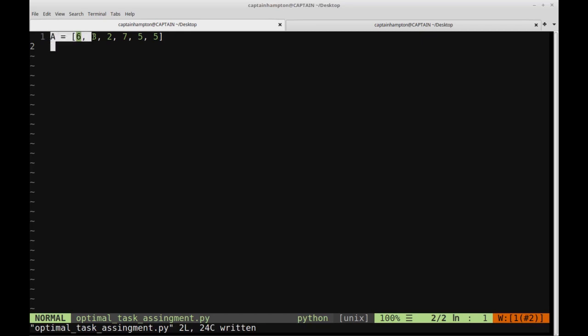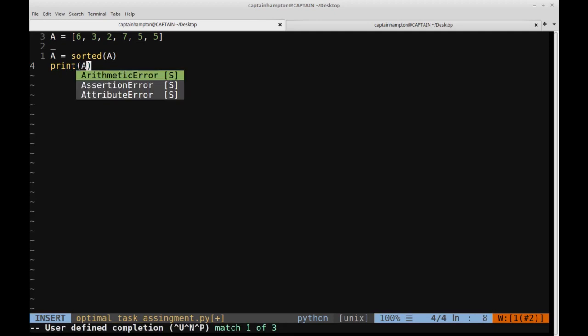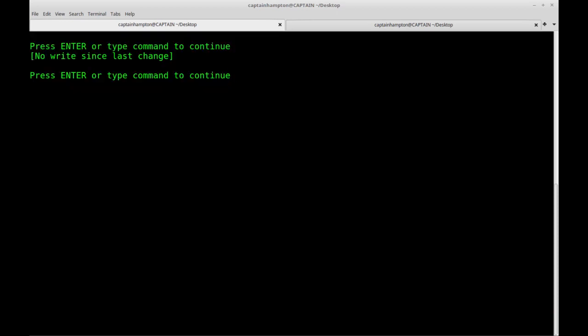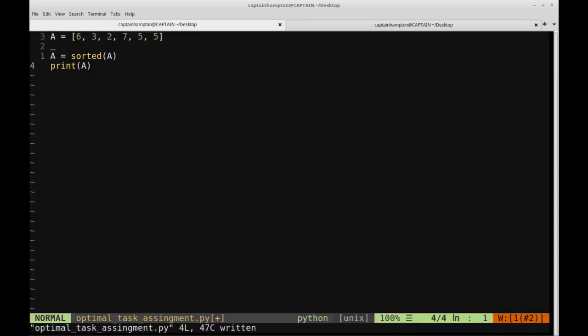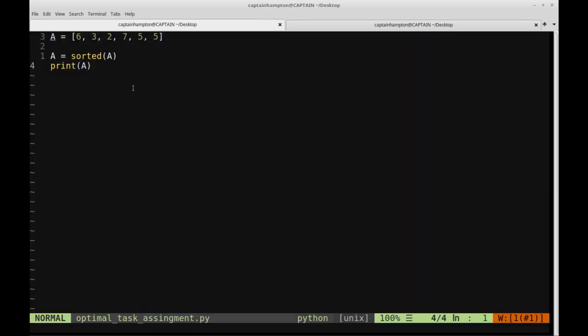So I've already coded up this array A, which is exactly what we saw from our example before. It just has the same numbers in there. What we're going to do is follow the greedy approach and check if we get the same pairs that we got in the example in the slide. The first step is we want to sort the array. So we're going to say A equals sorted of A. If we print out A to the screen, we should just see the sorted array. So the sorted array is 235567. Okay, so I'm just going to get rid of that print statement.